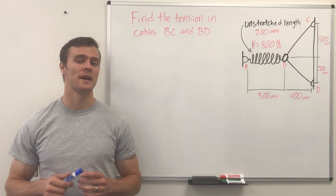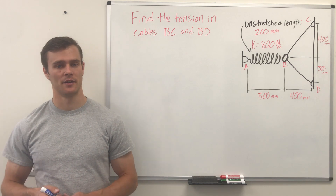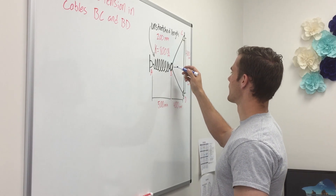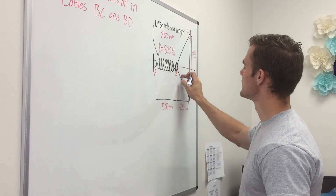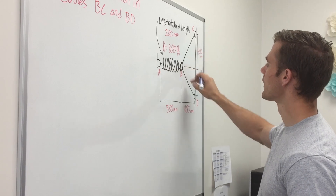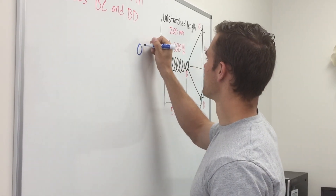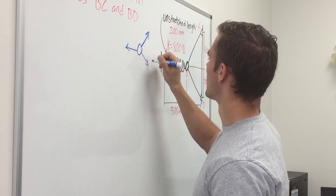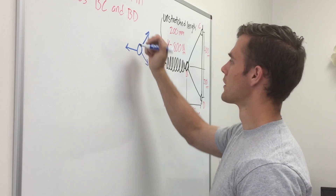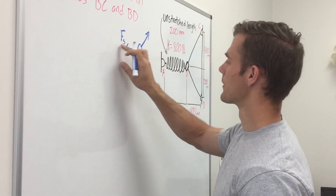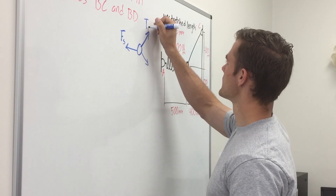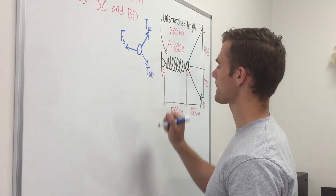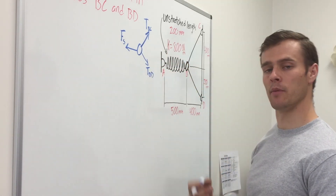The first step in solving this problem, like most problems, is to draw a free body diagram. We're going to draw a free body diagram of this ring because we need to find the tension in these two cables — the forces pulling on this ring from all sides. We'll have the ring with two forces coming off of it and the force from the spring pulling on one side. We'll label this F sub S for the spring force, and the tensions in BC and BD for the two ropes.